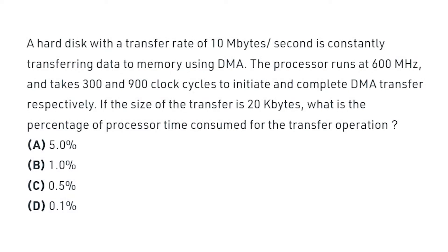A hard disk with a transfer rate of 10 MB per second is constantly transferring data to memory using DMA. The processor runs at 600 MHz and takes 300 and 900 clock cycles to initialize and complete DMA transfers respectively. If the size of transfer is 20 KB, what is the percentage of processor time consumed for transfer operation?